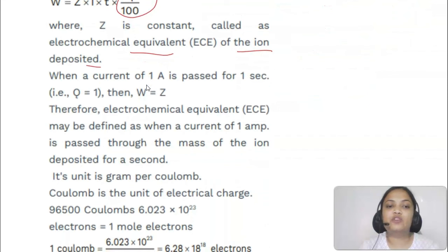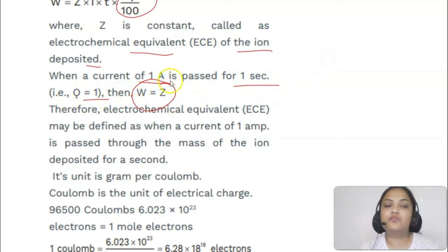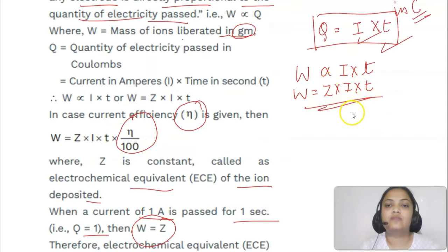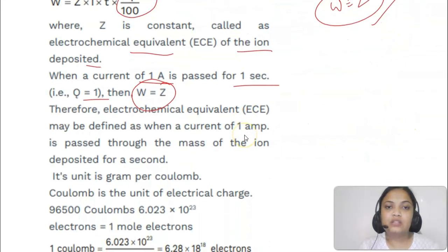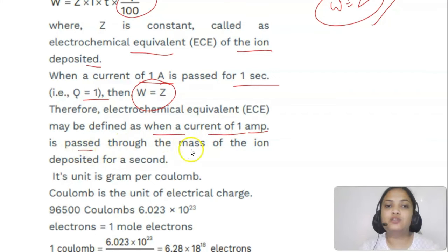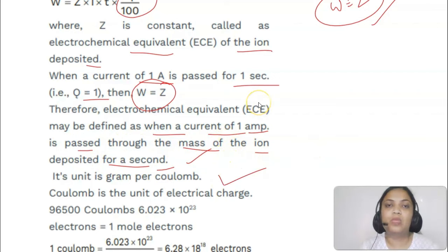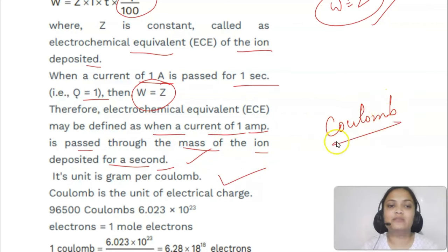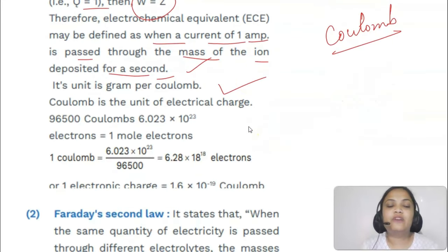The electrochemical equivalent z is defined as the mass of ion deposited when a current of one ampere is passed for one second. Its unit is gram per coulomb. Now, for the deposition of silver ions, the reaction shows that one mole of electrons is required for the reduction of one mole of silver ions. From stoichiometry we can calculate the amount of electricity required.